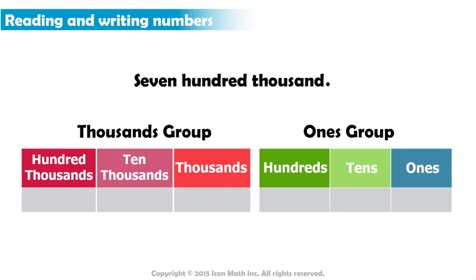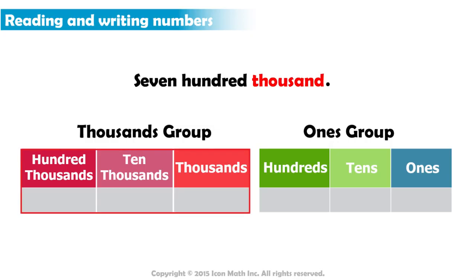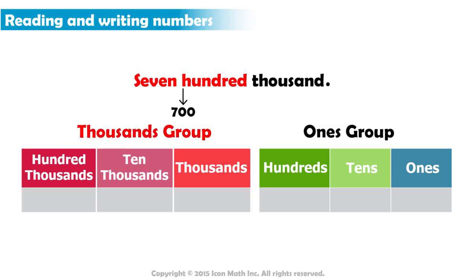Now we move to the number 700,000. We start from the left and read 700,000. So we have a thousands group, and it has the three-digit number 700. We place 700 in the thousands group — the seven in the hundred-thousands place, a zero in the ten-thousands place, and a zero in the thousands place. We write a comma immediately to the right of the last digit we wrote, the thousands digit.